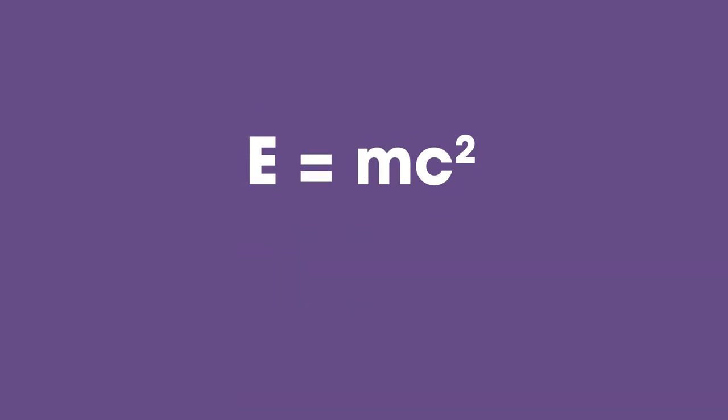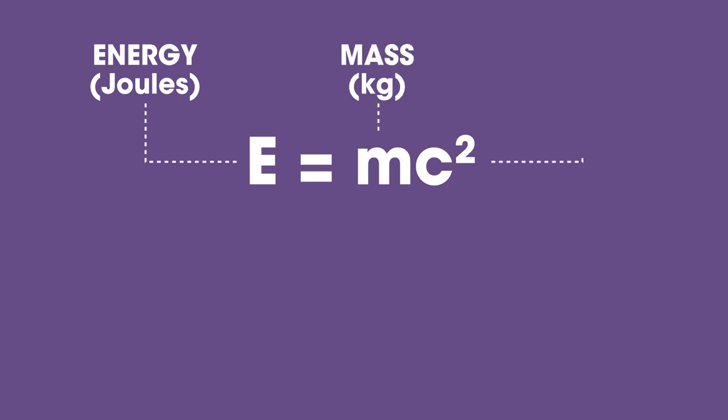E equals MC squared. This must be the world's most famous equation and links mass with energy, where E is energy measured in joules, M is mass measured in kilograms, and C is speed of light, which is 3 times 10 to the power of 8 meters per second.